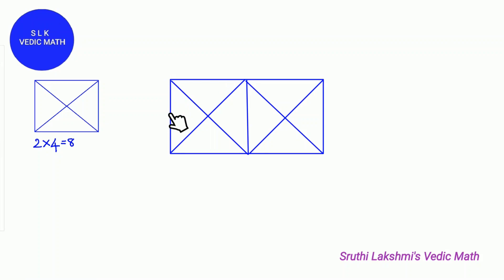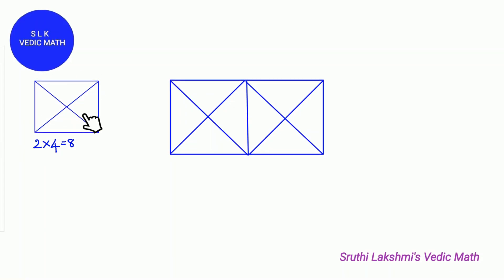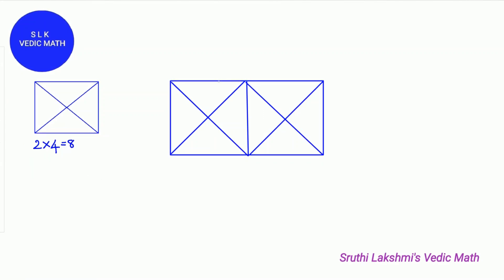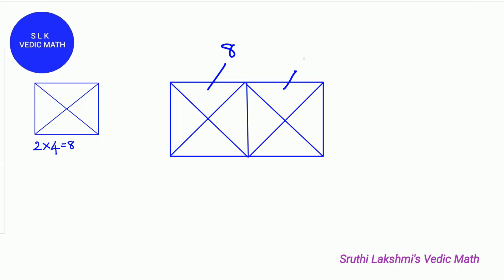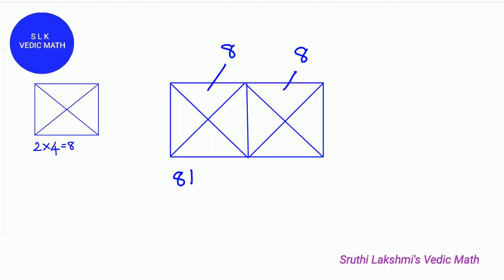See this square, it's the same as this one. It's 2 times 4 equal to 8. So this square only has 8 triangles. And this square only also has 8 triangles. So we add 8 plus 8 which gives us 16.